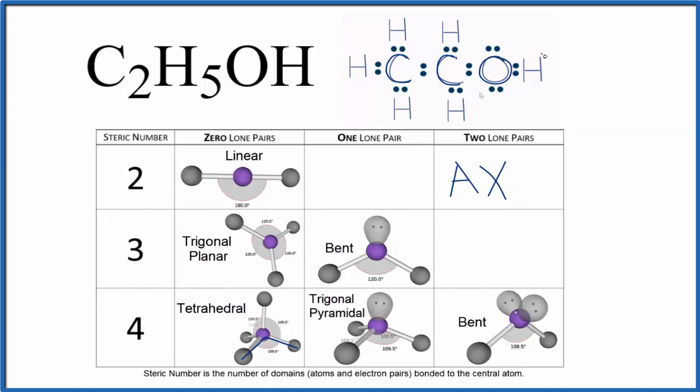For the oxygen we have our hydrogen atom and then this group here. So we have two things bonded there and we have two lone pairs. So we have AXE2. If you look that up, you have a bent molecular geometry.